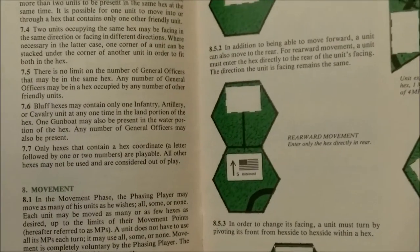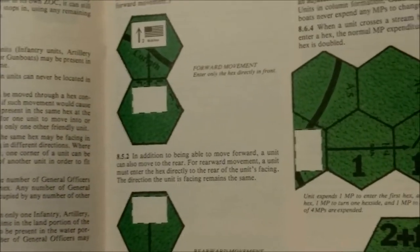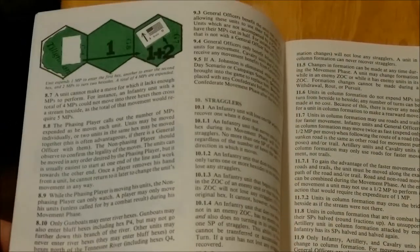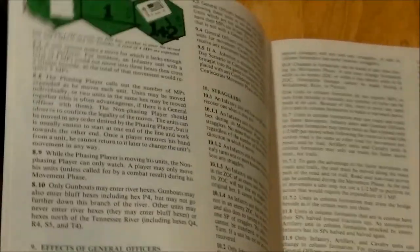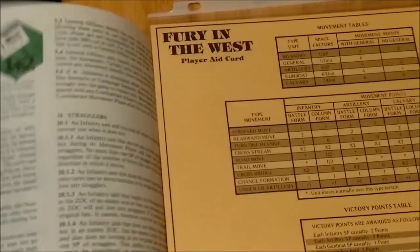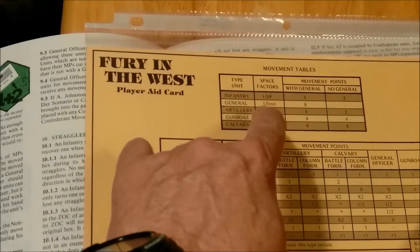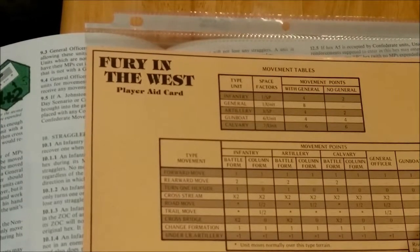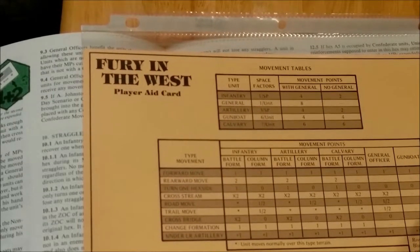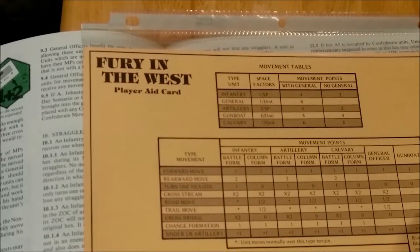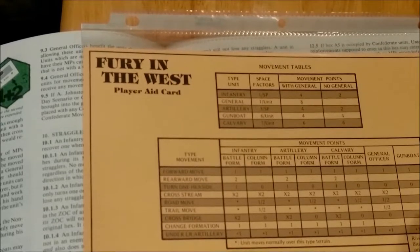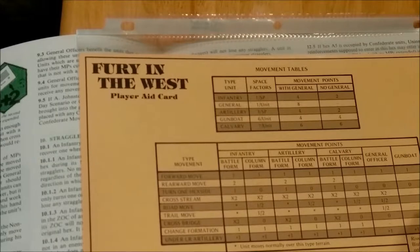We have basic movement diagrams on examples of play showing how units move and the movement points that they spend. Movement points are not printed on the counters. They are printed here at the movement tables with different unit types: Infantry, General, Artillery, Gunboat, Cavalry. Normal stacking is two units per hex.